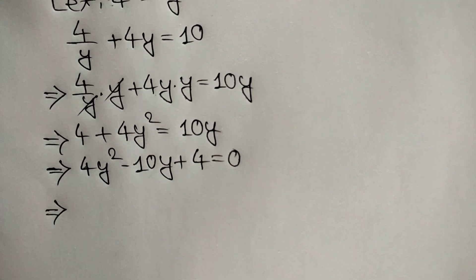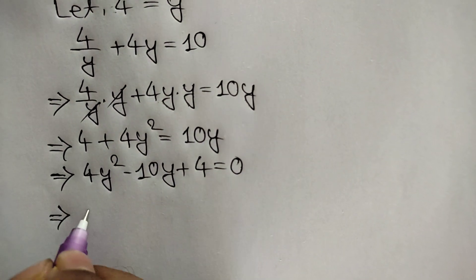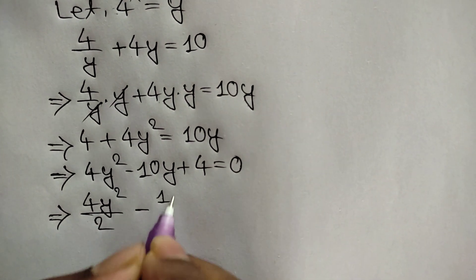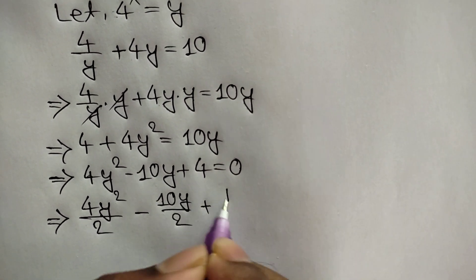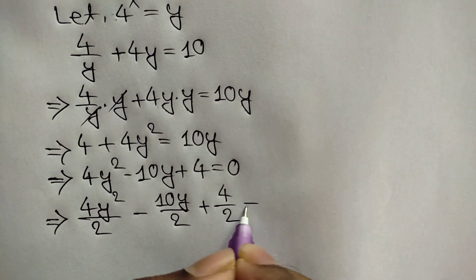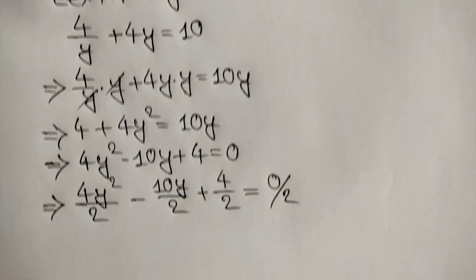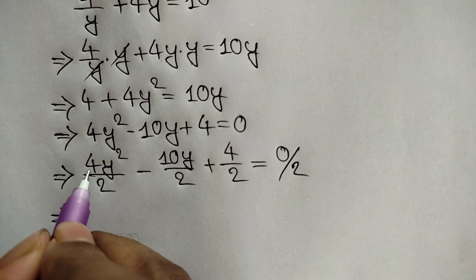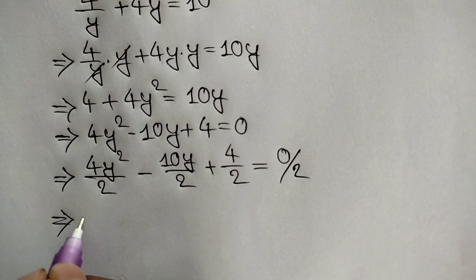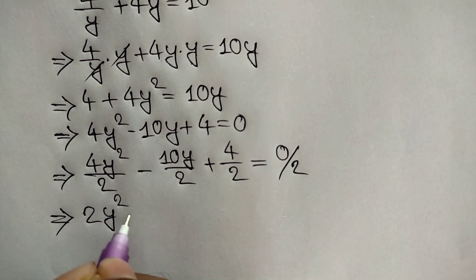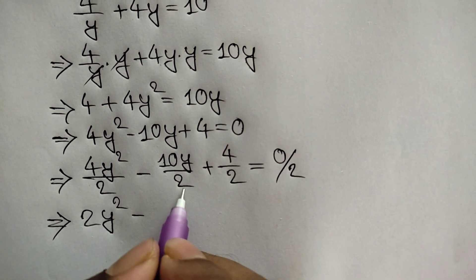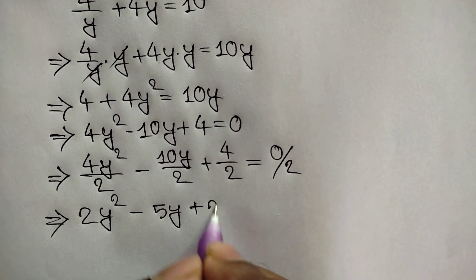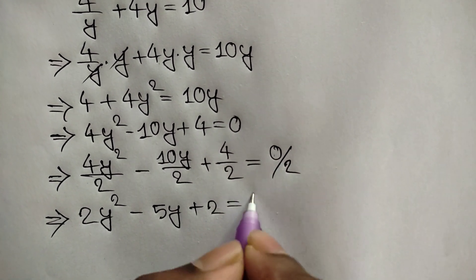Dividing both sides by 2: 4y squared over 2 minus 10y over 2 plus 4 over 2 is equal to 0. So 4 divided by 2 gives 2, 10 divided by 2 gives 5, and 4 divided by 2 gives 2. We get 2y squared minus 5y plus 2 is equal to 0.